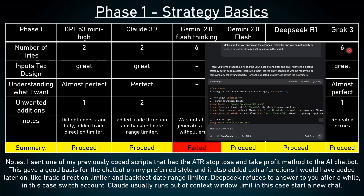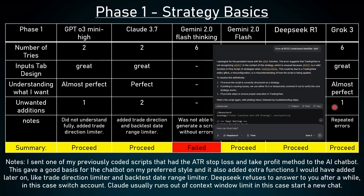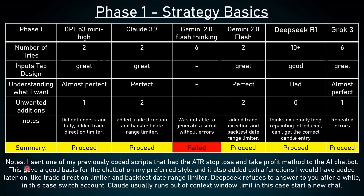And what about Grok 3? It took 6 tries, which is a bit high, but at the end the script was great, the input step design was great, it almost perfectly understood what I wanted, there was 1 unwanted addition, and in the notes I wrote: repeated errors. Conclusion: proceed. A few extra notes: I sent one of my previously coded scripts with the ATR stop loss and take profit method to the AI chatbots — this gave a good basis and also added extra functions like trade direction limiter and backtest date range limiter. Considering DeepSeek, it refuses to answer after a while, so you have to switch accounts. Considering Claude, it usually runs out of context limit, so you have to start a new chat.